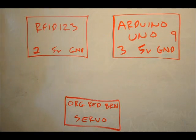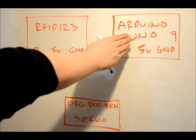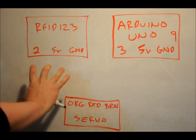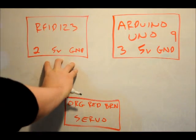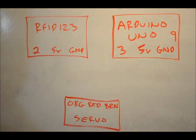So first things first, we're going to use our RFID123 to power the Arduino Uno and the servo motor. Now what we're going to use, three pins, we're going to use three pins on the RFID123, four pins on the Arduino Uno, and the three pins on the servo motor.